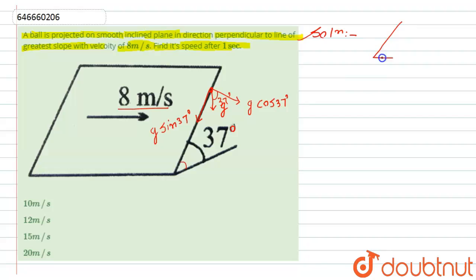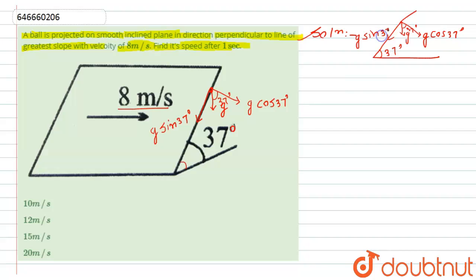If we draw the diagram, the angle is 37 degrees. The gravitational acceleration g has components: g cos 37° perpendicular to the plane and g sin 37° along the inclined surface. Because of this gravitational acceleration, at the initial point the velocity along the plane is zero.